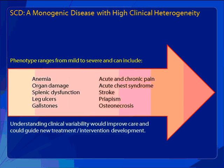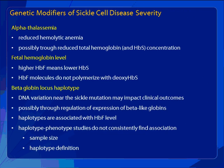We feel that a better understanding of the clinical variability could lead to improved care and could guide new treatment and new intervention development. For example, you can imagine the benefit of even just being able to better screen for and better predict who is at risk for severe disease before they can have multiple events and before they can really begin to accumulate organ damage.